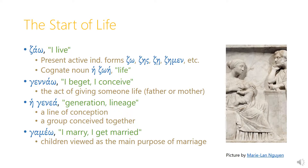The basic verb that means 'I live' is dzao. This is an alpha contract verb, and one thing to be careful of here is that where most alpha contract verbs have the alpha show up a lot in their endings, with dzao we instead see an eta showing up. For whatever reason, that alpha gets lengthened to an eta. So the present indicative first person singular is dzao, meaning 'I live,' because the alpha contract vowel usually drops out in the first person singular.